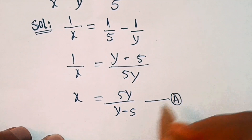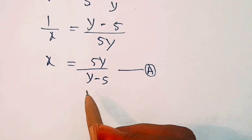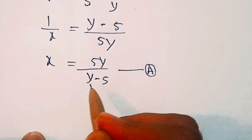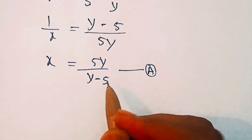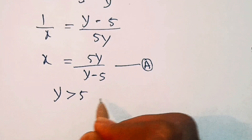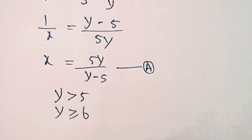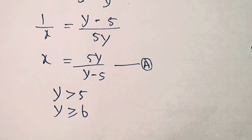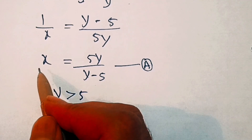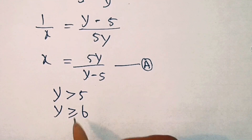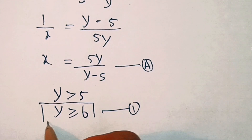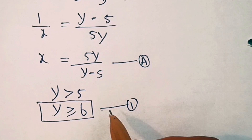Since y is a positive integer, for x to be positive, y must be greater than 5, that is y must be greater than or equal to 6, because if y is less than 5 then x will be a negative integer. So we have y ≥ 6. Let's call this equation (1).